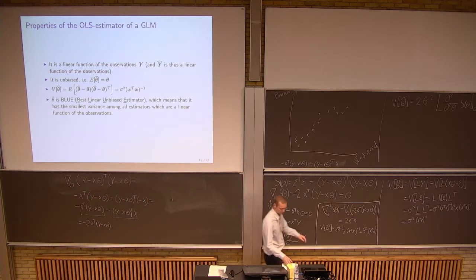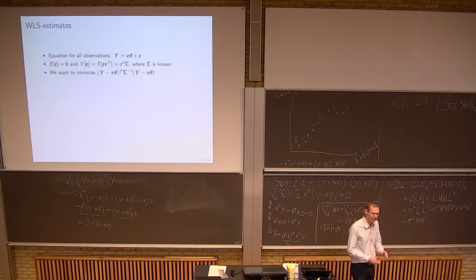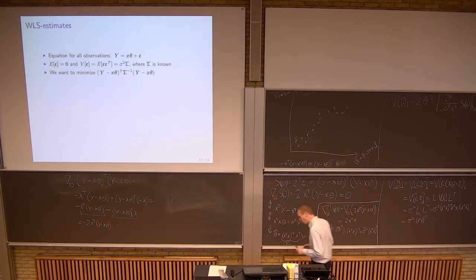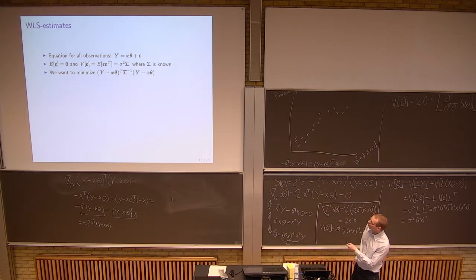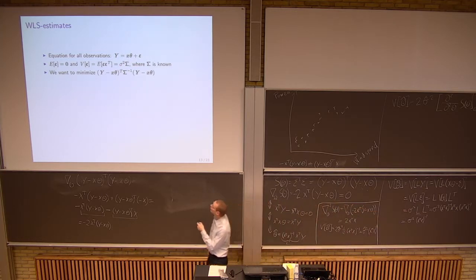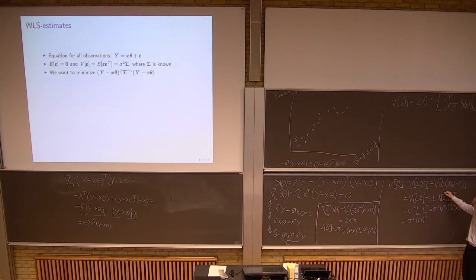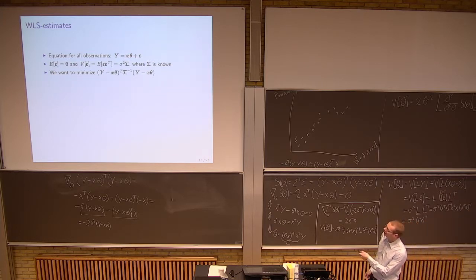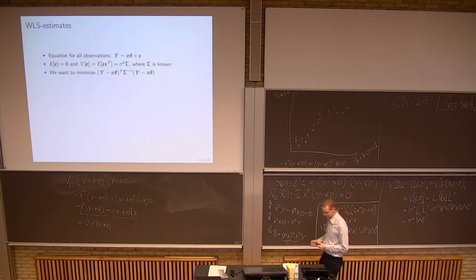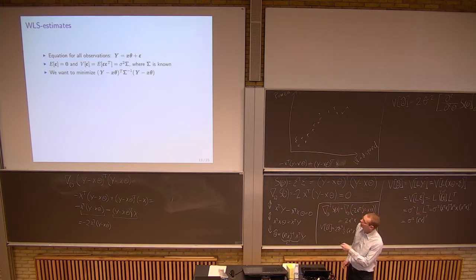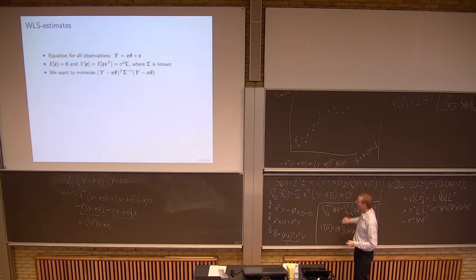Now we will move on to what's called weighted least squares. This is almost the same story. We have the same model, but the only thing we change is: we keep the expected value of epsilon at zero, and the covariance matrix is now different. Before we had sigma squared times the identity matrix. Now we will say we can have another matrix here — not the identity matrix. Basically, what we then want to minimize is the expression with sigma inverse inside.